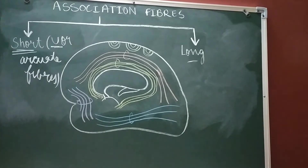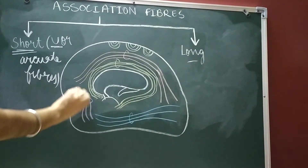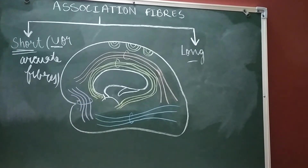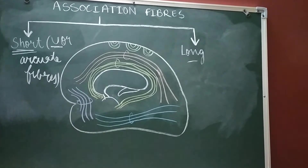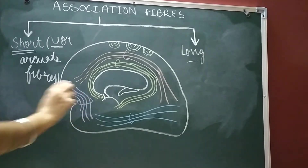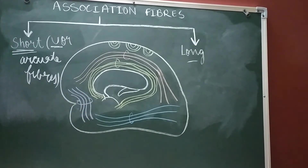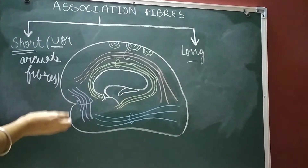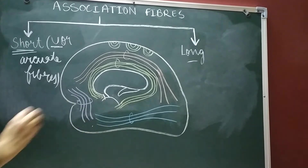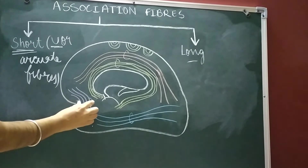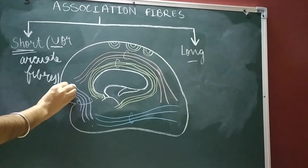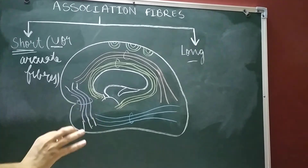Talking about the uncinate fasciculus — this group of fibers, this fiber bundle, is the uncinate fasciculus. These are the fiber bundles connecting the motor speech area with the temporal lobe. When we talked about Brodmann numbers, areas 44 and 45 correspond to the Broca's speech area. So this uncinate fasciculus connects the Broca's speech area with the temporal lobe. One more thing to note: in the middle these fibers are narrow, while on the edges they flare out.